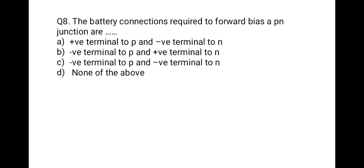The next question: what battery connection is required to forward bias a PN junction? The correct option is positive terminal connected to the P-type and negative terminal connected to the N-type.